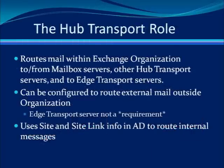Next up is the hub transport server. This server will route your mail within your Exchange organization, and it's similar to the bridgehead server in Exchange 2000 or 2003. You can also configure it to route external mail, so you don't necessarily have to use an edge transport server, although it's recommended. All mail coming in and out of your organization will go through the hub transport role, meaning you can establish transport rules to control the mail while it is in transit. It relies completely on Active Directory, using site and site link information to route internal messages.